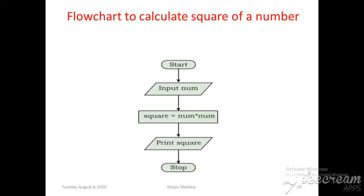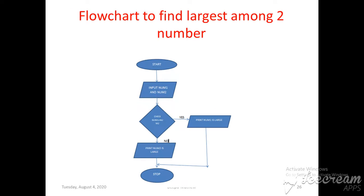The next flowchart is to find the largest of two numbers. We start using the oval symbol. Then, to find the largest of two numbers, we read two numbers from the keyboard using the parallelogram: 'Input num1, num2'.